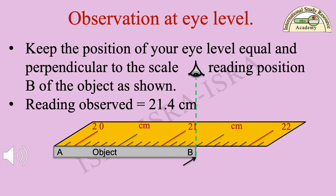Observation at eye level: Keep the position of your eye level equal and perpendicular to the scale reading position B of the object as shown. The reading observed is equal to 21.4 cm.